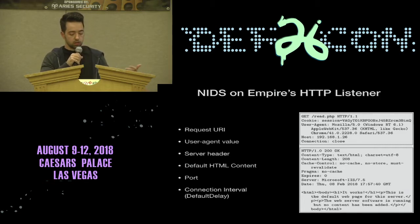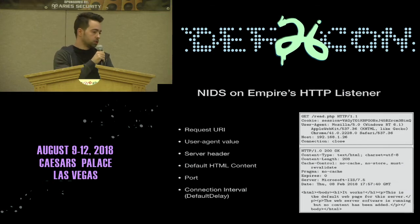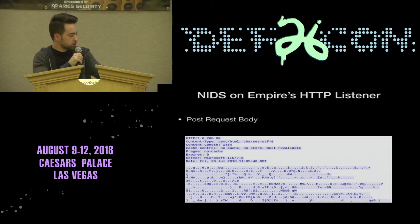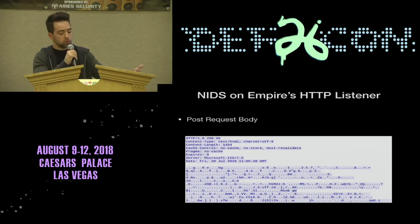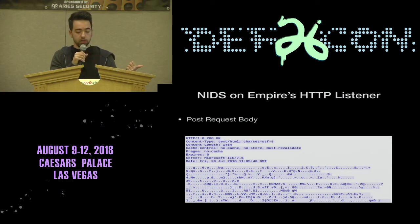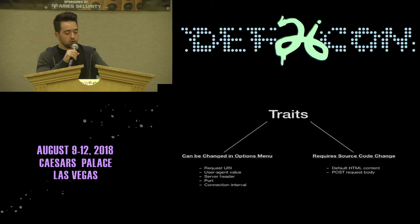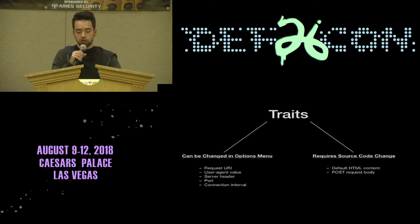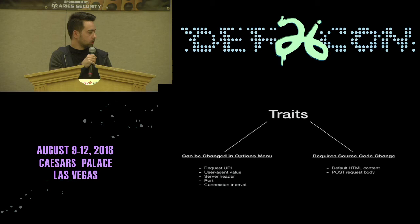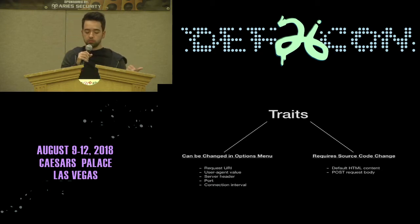It's the same with the server header. If you are using Microsoft IIS servers on the network, setting the server header to Apache won't be a good choice. The last trait is the POST request body — as seen in the example, the POST request body is encrypted and contains gibberish characters. If all users are browsing regular websites, this will likely be flagged by the anomaly detection system. So we've listed the traits that should be considered. Now let's check how we can adjust them. We can gather the traits into two different groups: traits that can be changed in the listener options menu, and traits that can be changed by modifying Empire's source code.